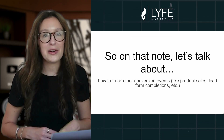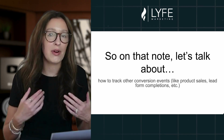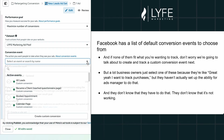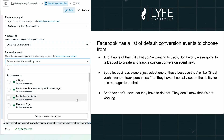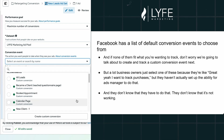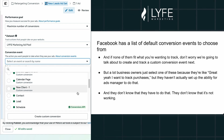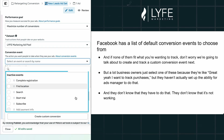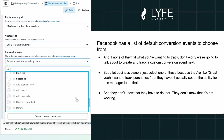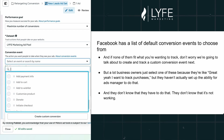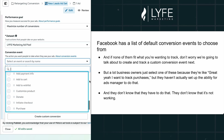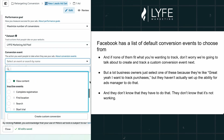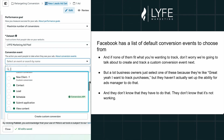So let's talk about how to track other conversion events like product sales, lead form completions, etc. Facebook has a list of default conversion events for you to choose from. And if none of them fit what you're wanting to track, don't worry — we're going to talk about that in a bit. A lot of business owners select one of these from the dropdown at the ad set level when setting up their ad, thinking great, I want to track purchases — but they haven't actually set up the ability for Ads Manager to do that. They don't know that it doesn't work just by selecting it from the dropdown. So here's what you do: in Events Manager, click your pixel, then Add Events from the Pixel, and then open the Event Setup Tool.